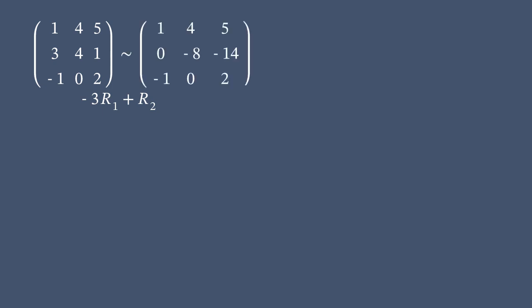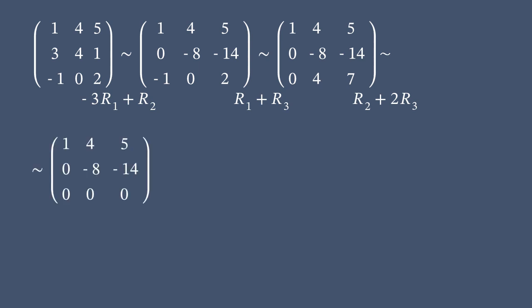Then, we just add together the first and the third rows. Now, we add the second row to the third row multiplied by two. Finally, we can identify the reduced row echelon form. Here we go.